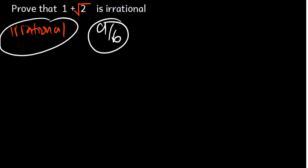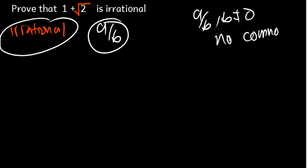But if you can express a number in the form of a over b, where b is not equal to 0, and a and b are integers with no common factors, then we are talking about rational numbers.